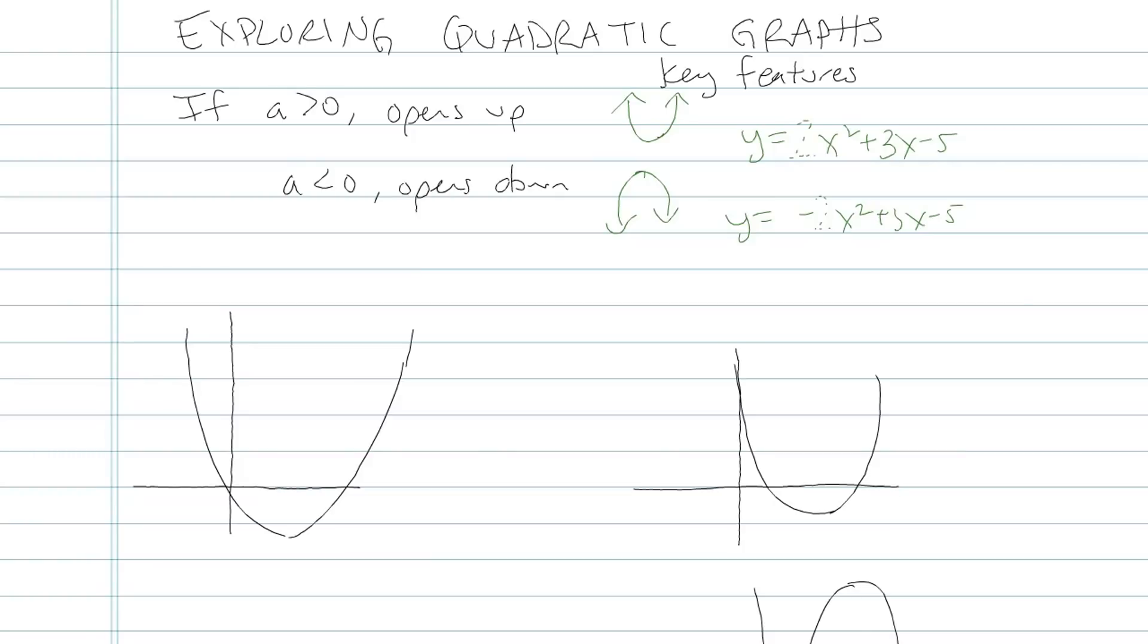A lot of students remember this because if it opens up, it's like a smiley face. A smiley face is happy. That's positive. As opposed to if it opens down. That's a frowny face. Frowny face is negative. That may or may not help you, these little smiley faces and frowny face parabolas.